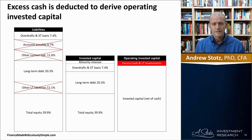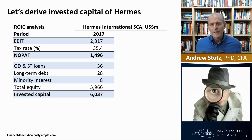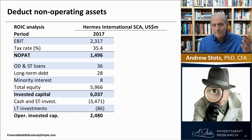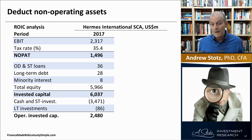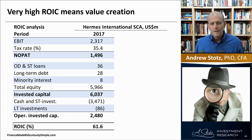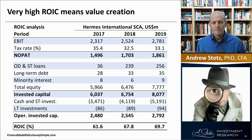Let's look at the invested capital for Hermes. It's almost all equity at 5,966, with only a tiny amount of other items because the company doesn't really borrow money. If we back out the cash, short-term investments, and long-term investments, we can see the company doesn't need all 5,966 in equity — it could retire that with excess cash through a share buyback. So the true operating invested capital is 2,480. The NOPAT of 1,496 relative to that gives an ROIC of 61.6%, rising up to 69.7% — because the company is highly profitable and sitting on a lot of cash.